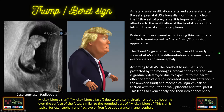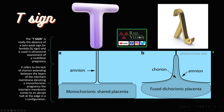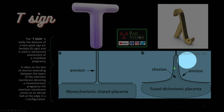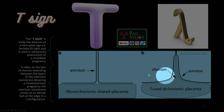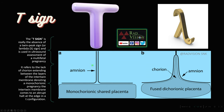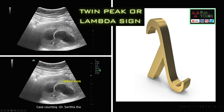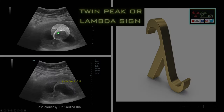Next, what is the T sign? The T sign is nothing but the absence of the twin peak sign. Normally, the twin peak sign occurs when chorionic tissue extends into the inter-twin membrane — this is the lambda sign indicating dichorionic pregnancy. Absence of chorionic tissue extension into the inter-twin membrane gives the classical T sign, indicating monochorionic pregnancy. Whenever you see the T sign, suspect monochorionic pregnancy; whenever you see the lambda sign, suspect dichorionic pregnancy.